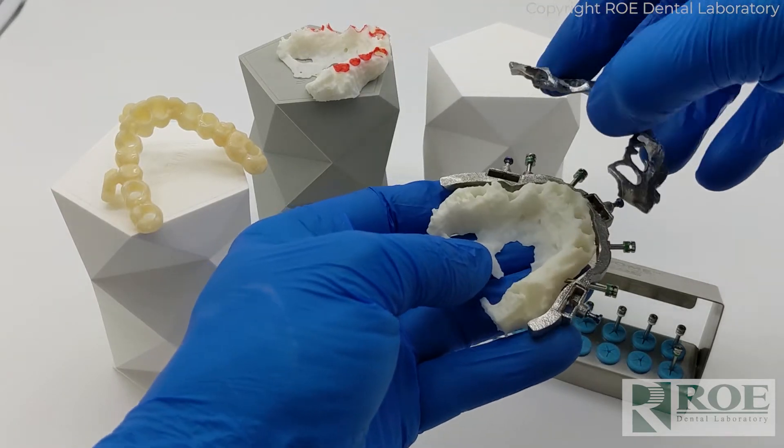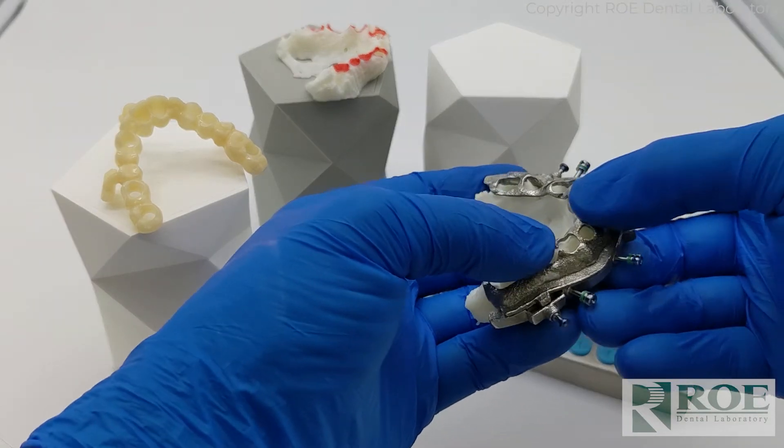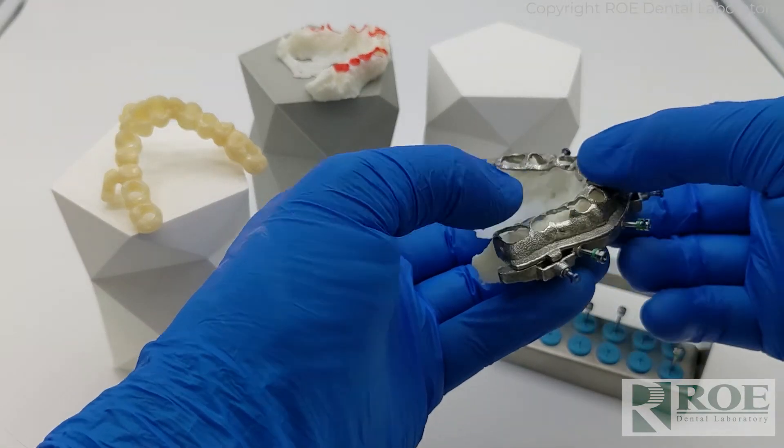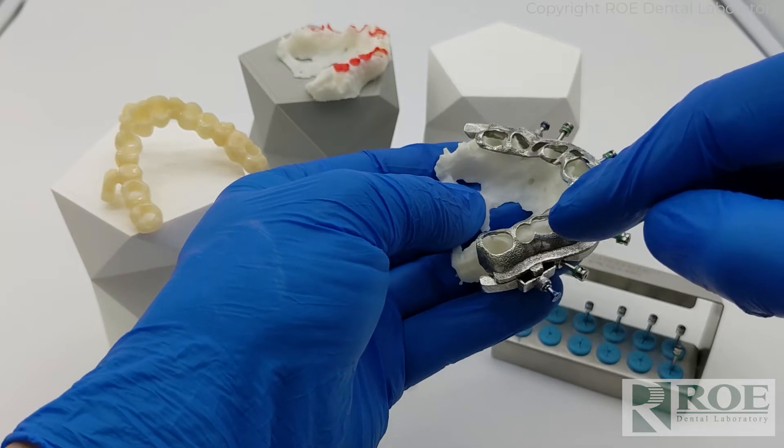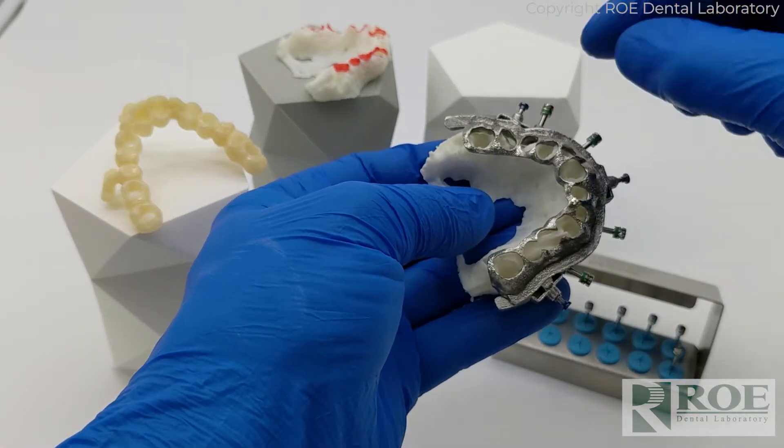Even before we adjusted, the scallop guide seated and pinned and was passive, but we still needed to make some room here for a pontic. We had to open up, as you can see here, which kind of mirrors the two.